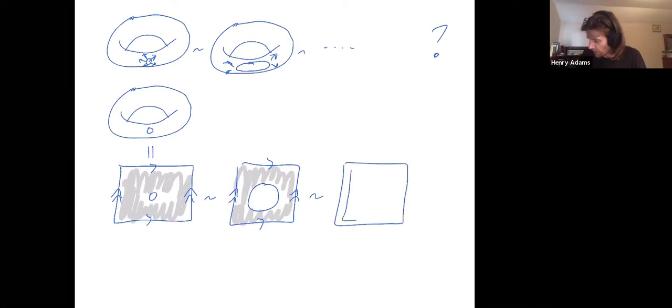You know, I keep making this puncture bigger and bigger. This edge on the left is identified with the one on the right. This edge on the top is identified with the one on the bottom. Finally, I just get down to the square wire frame with nothing on the inside.